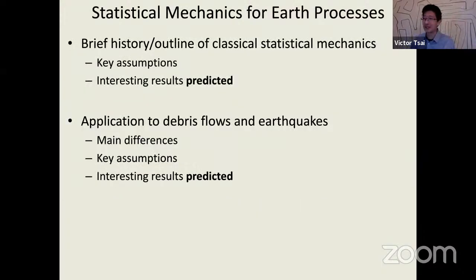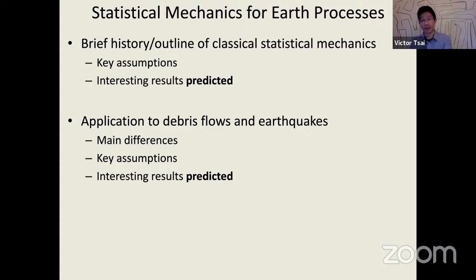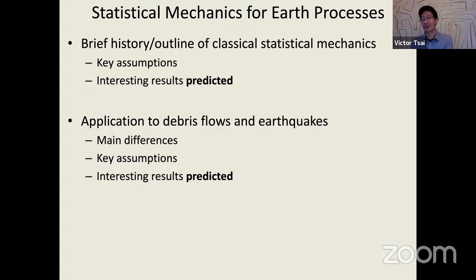As an outline: I'll give a brief history of classical statistical mechanics, trying to condense a whole course's worth of material into one slide covering key assumptions and interesting results. Then I'll talk mostly about applications of statistical mechanics to debris flows and earthquakes, showing a strong relationship between explaining complex motions for both. I'll cover key assumptions, differences from standard statistical mechanics, and interesting results we can predict with this model.